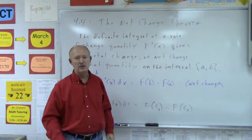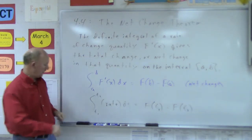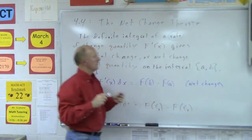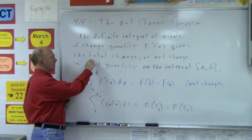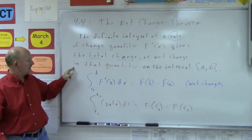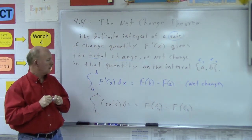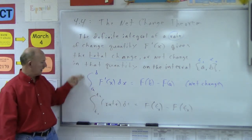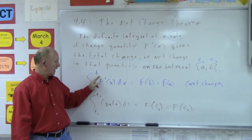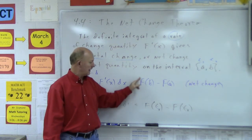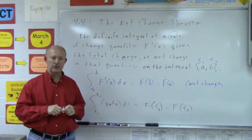This is called the net change theorem. What the net change theorem basically indicates is the definite integral of a rate of change. When you integrate a rate of change quantity described as F prime of x, it gives the total change — the net change in that quantity on the interval from a to b. In our textbook it's written as the integral from a to b of F prime of x dx, which gives us F(b) minus F(a), describing the net change over that time interval.